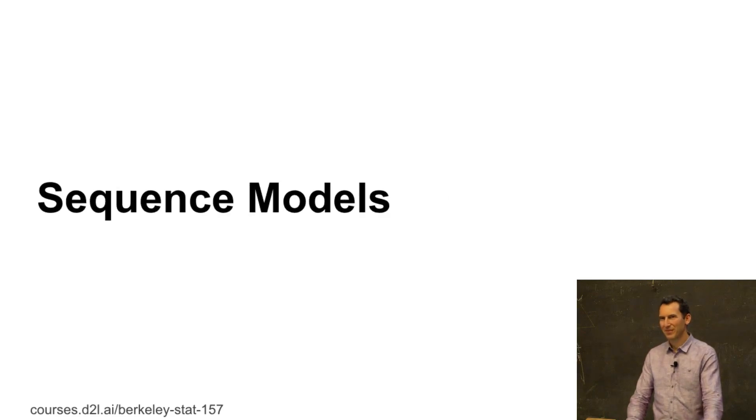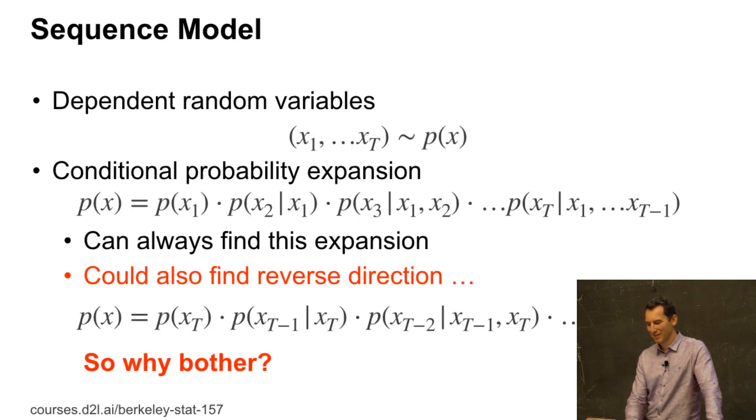Sequence models. So far we just saw the data isn't IID, so let's actually see how we can model this. If I have some dependent random variables, X1 through XT, in arbitrary order, and they're drawn from some P of X.